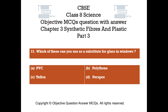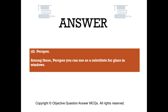Question number thirteen. Which of these can you use as a substitute for glass in windows? Option A: PVC. Option B: polythene. Option C: teflon. Option D: perspex. The right answer is option D — perspex. Among these, perspex can be used as a substitute for glass in windows.